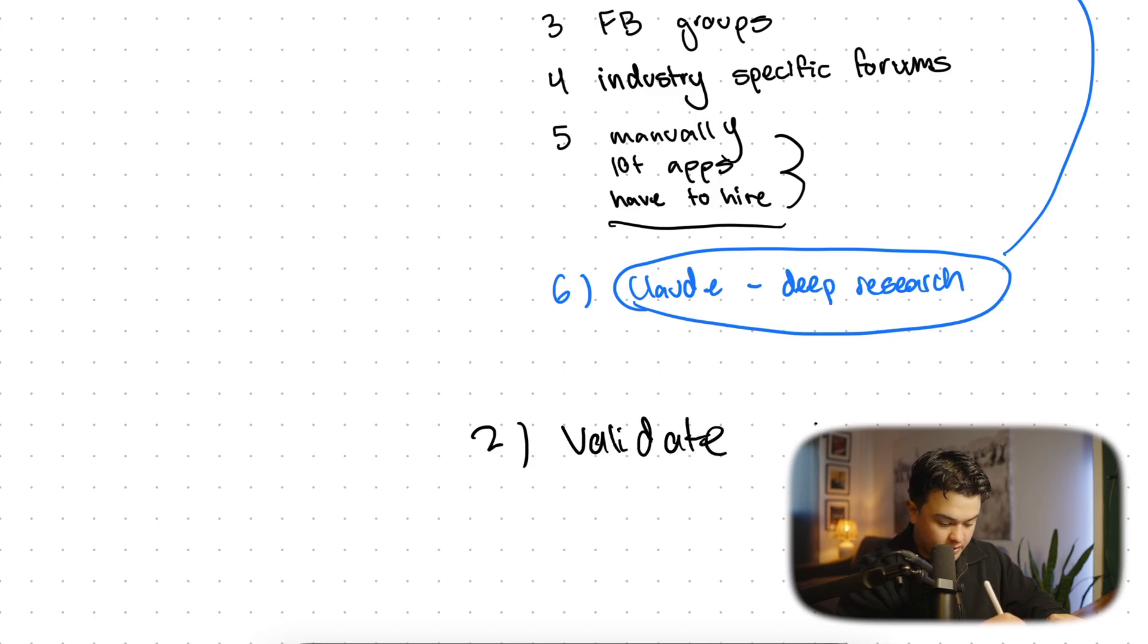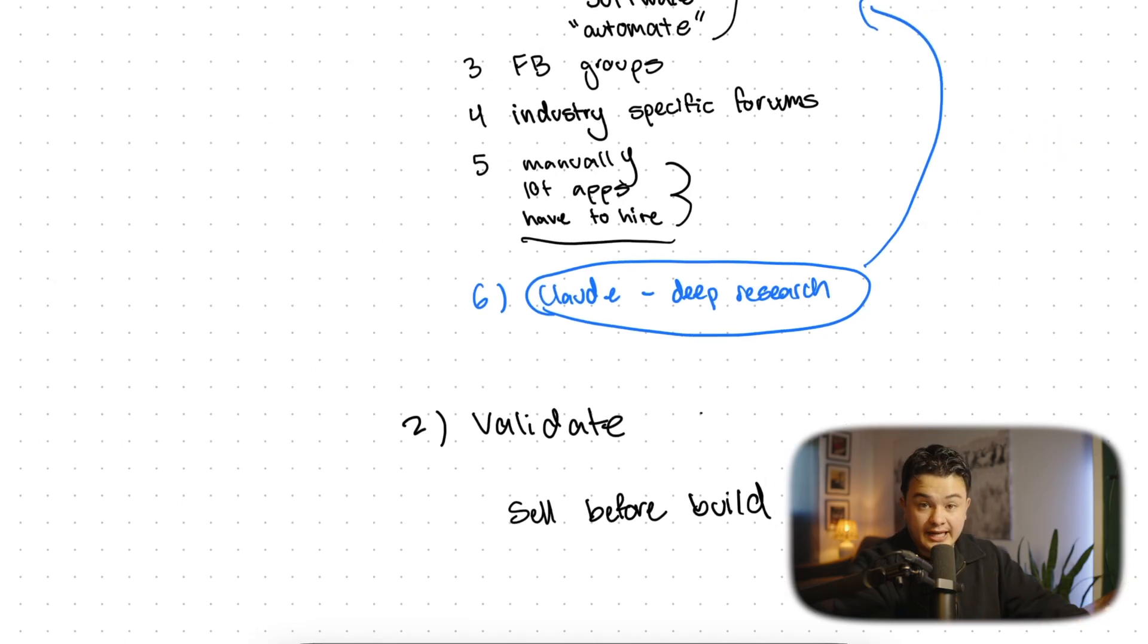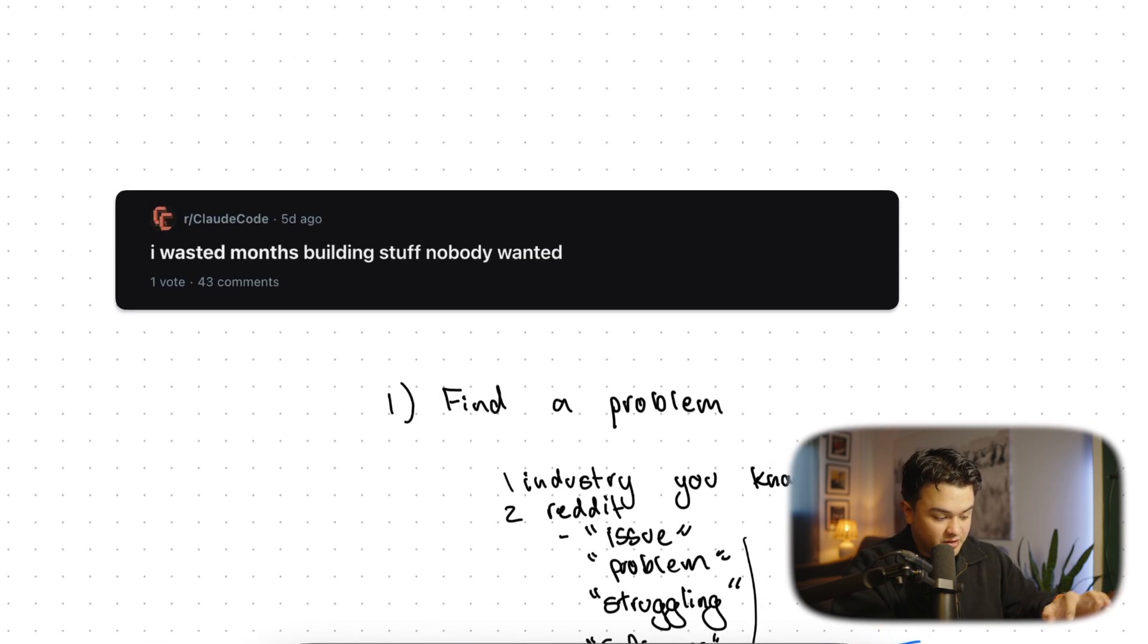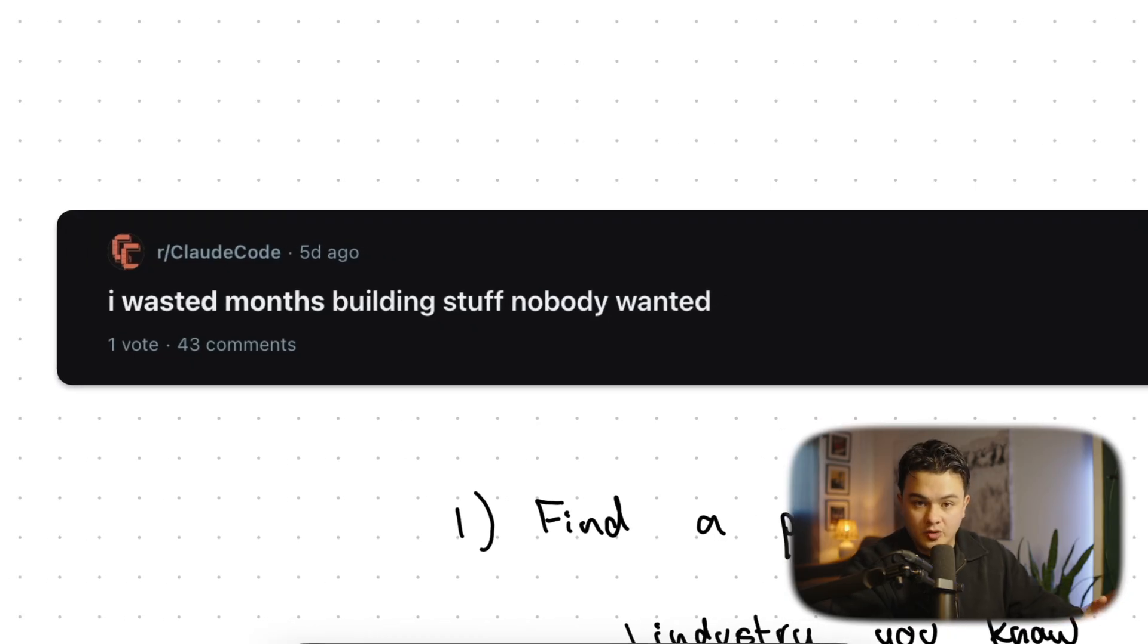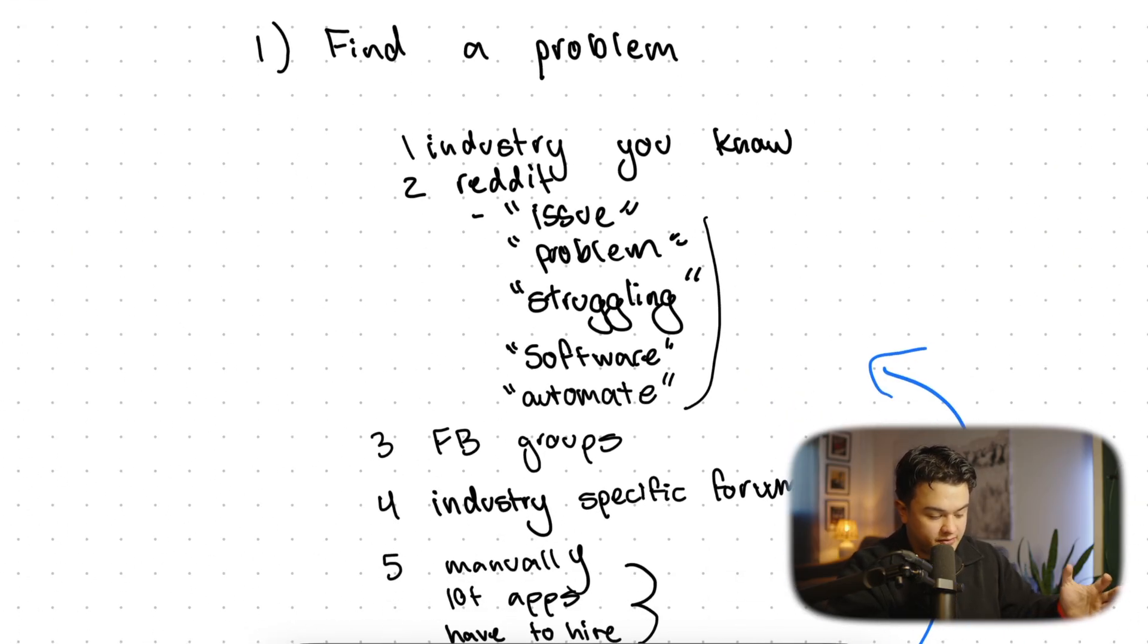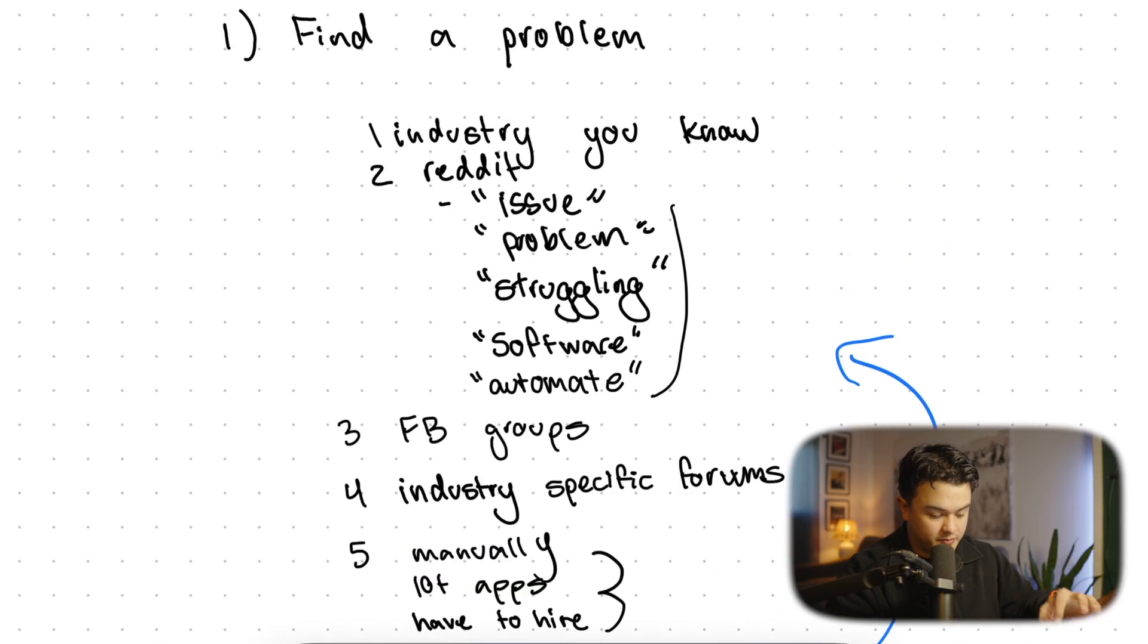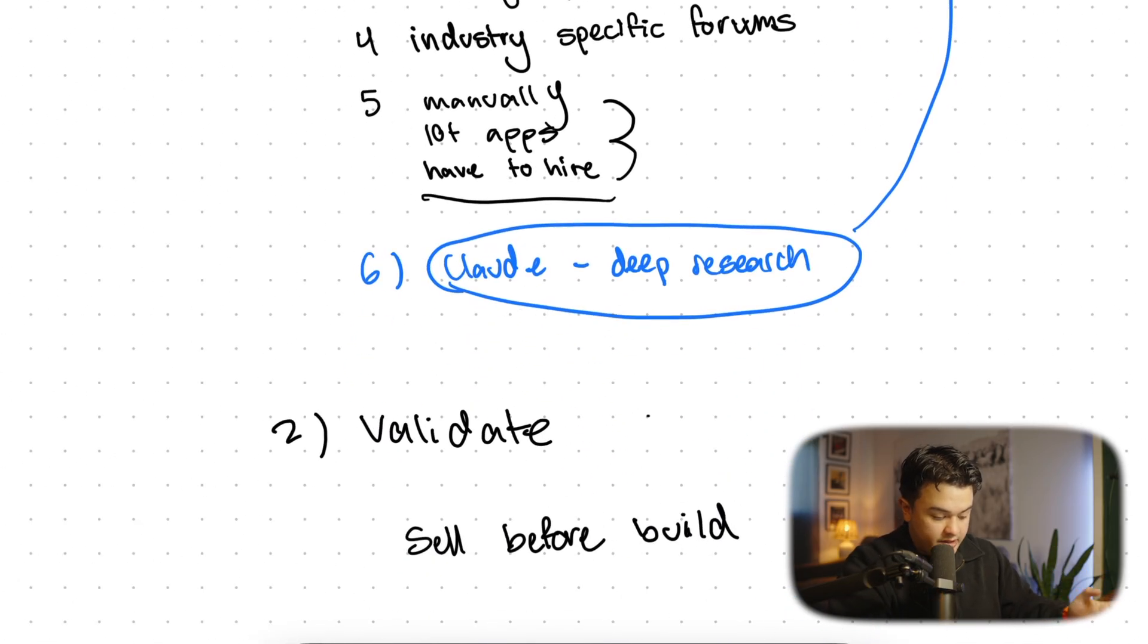We are going to sell before build. Some people might be going, what the heck? How are we going to sell something when we don't have any sort of offer or any product? Well, that's the problem. That's why most people waste months building stuff that nobody wants, because we have a pretty good guess of what our industry wants because we did research. But we never know for sure until we have cold hard dollars in our bank account and somebody actually paid us to build it out for them. That's why we sell before we build, so we don't waste time building things that nobody wants.